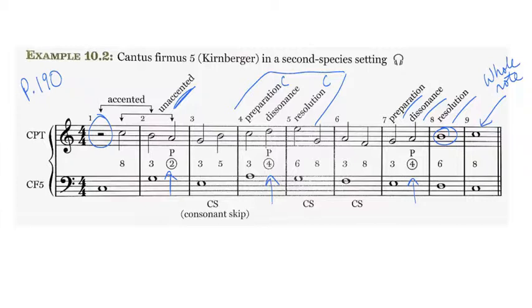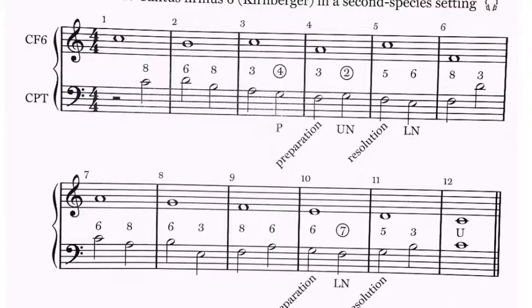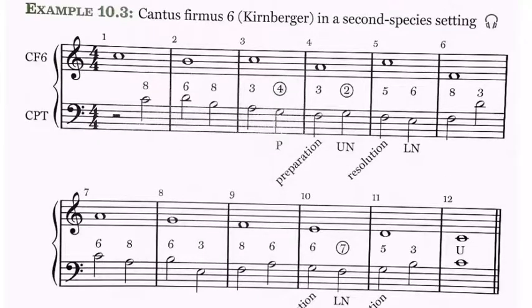Let's continue. We're going to go over to page 191 and example 10.3. Example 10.3 shows us another type of dissonance that we can use. And that's called a neighbor tone. If you look in measure four, we have a dissonance of a second here. And that's called a neighbor tone.